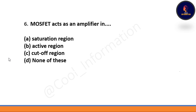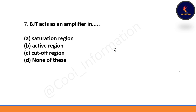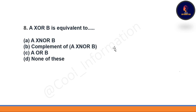Do subscribe the channel, guys. Next question: MOSFET acts as an amplifier in — option A: saturation region, option B: active region, option C: cutoff region, option D: none of these. The correct option is option A — saturation region. Next question: BJT acts as an amplifier in — option A: saturation region, option B: active region, option C: cutoff region, option D: none of these. The correct option is option B — active region.